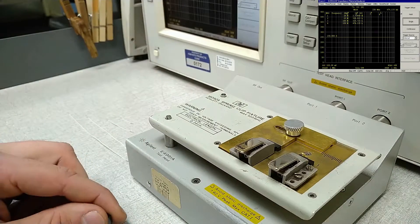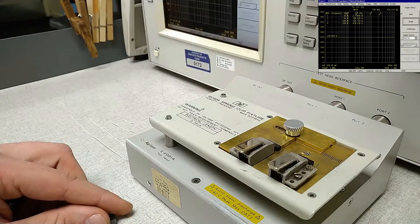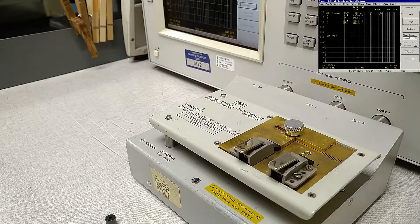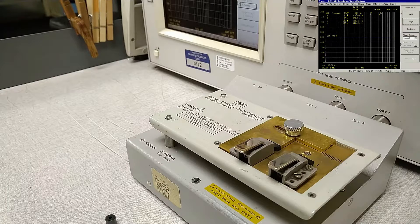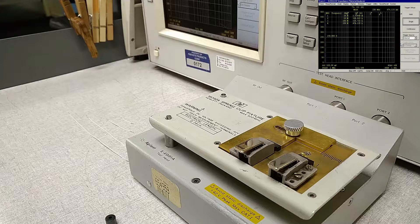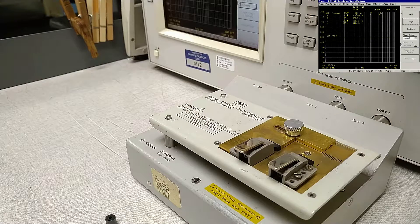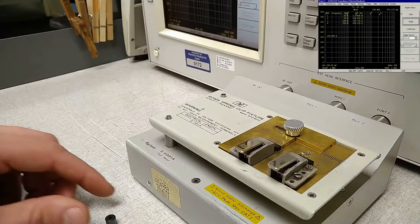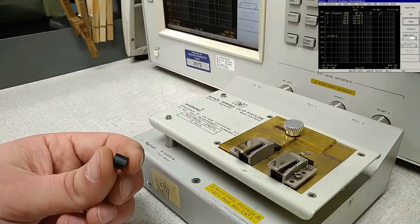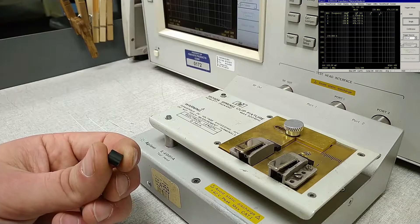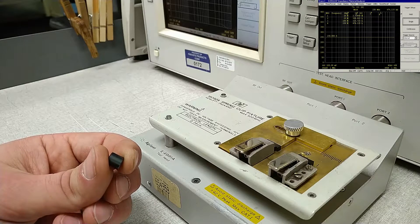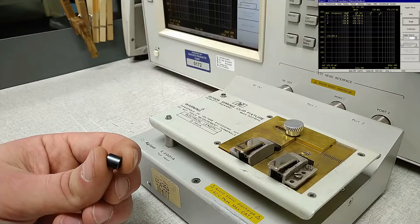A little bit about our test setup today. We have an Agilent E4991A RF impedance analyzer along with a 16092A spring clip fixture. The part we're going to be measuring is a Ferrite Products 2643000801 shield bead.